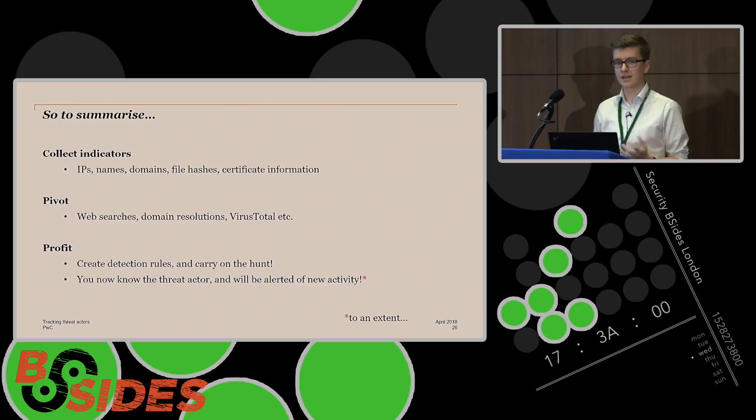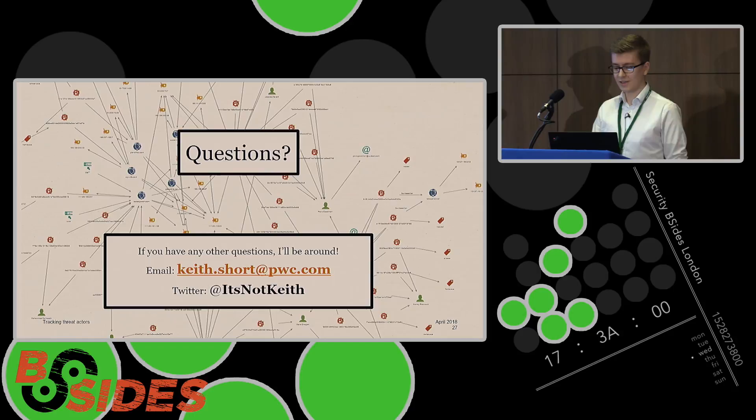So to summarize, essentially for active tracking I've boiled it down to three main things which is collect the initial indicators from the sample you're starting with, pivot off of these domains to IPs and such like I showed you earlier, and then profit. Once you've got the detection rules in place you'll be able to see them when they're starting to do stuff in the future. And now you know the threat actor, you know the patterns of their behaviors and you're kind of the expert and now you can impress people. So when they get a new email in from the same actor you can go oh I know this one and they'll be really impressed hopefully anyway. So that's about it for today. I went through it a bit fast but if you want me to talk about any other details in a bit more detail then come and catch me later or email me or get me at my Twitter. I haven't tweeted anything but that's how you can contact me. So thank you very much.